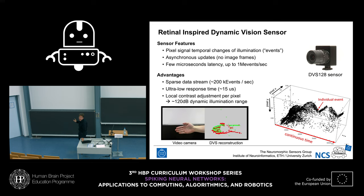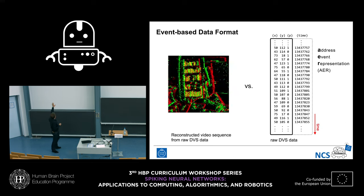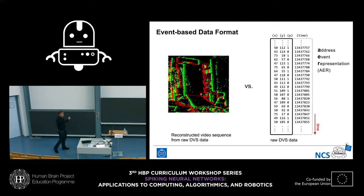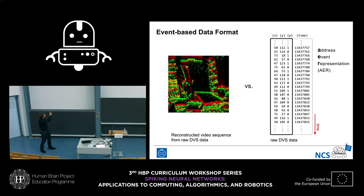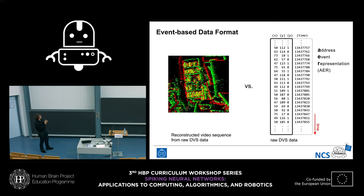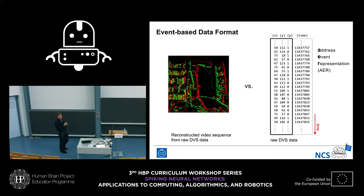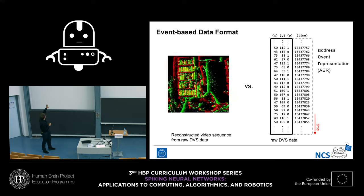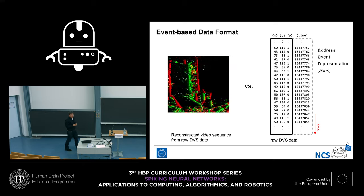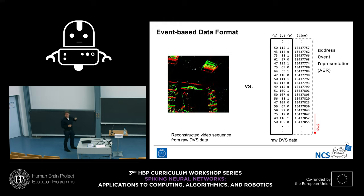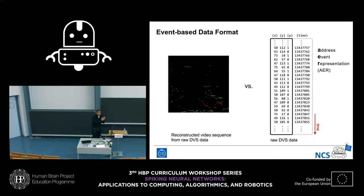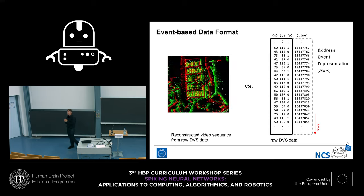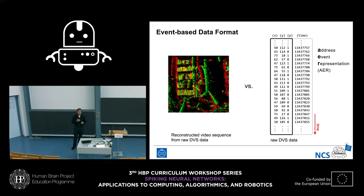This is a different data format — a spiking data format. On the left you see a video reconstruction of the camera moving inside an office. That's not what we get out of the camera. What we actually get is shown on the right: a sequence of individual events with X coordinate, Y coordinate, and polarity — where in an image things happen. We can reconstruct this into a video so humans can see what's going on, but really in our computer we get individual spikes and have to operate on those. This is a technical implementation of a fundamental principle of neuroscience — spikes propagating information — and it's very efficient in many ways.